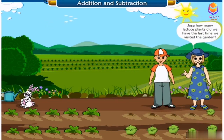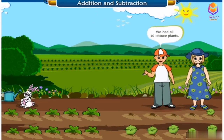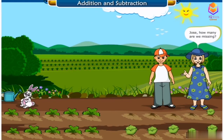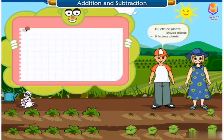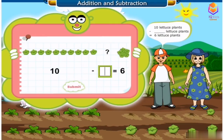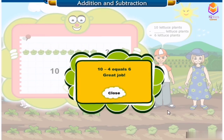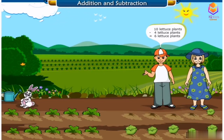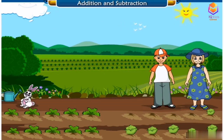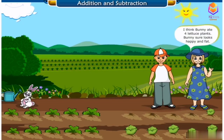Jose, how many lettuce plants did we have the last time we visited the garden? We had all ten lettuce plants. Jose, how many are we missing? We started with ten lettuce plants and now we have six lettuce plants. Let's do the math. Ten lettuce plants minus four lettuce plants equals six lettuce plants. Ten minus four equals six. Great job! The answer is four. I think bunny ate four lettuce plants. Bunny sure looks happy and fat.